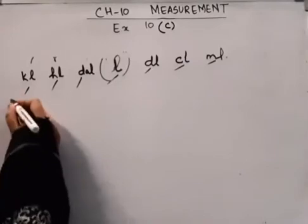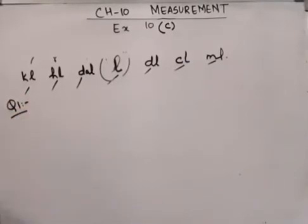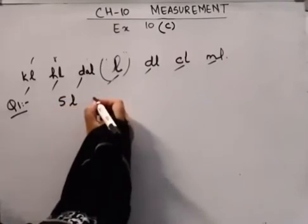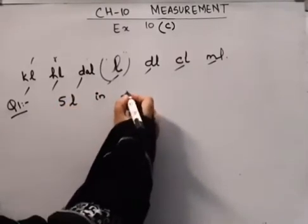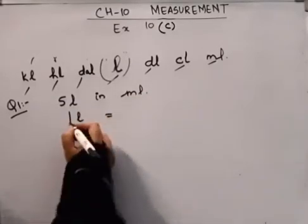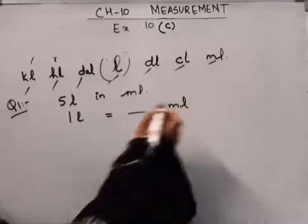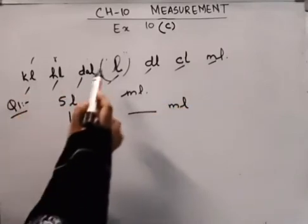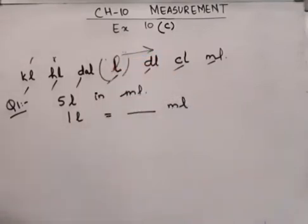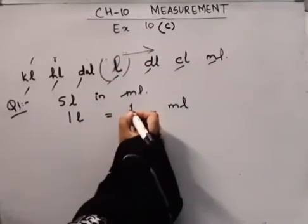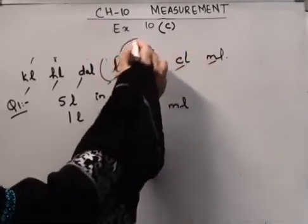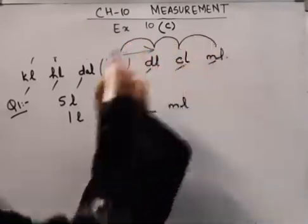Question number one is express 5 liters into ml. How do we do it? We will write this relationship. Here we have 1 liter is equal to dash ml. Now I see that when I move from liter to ml, I am moving towards right hand side. So this means multiply. How do we multiply? Every step is 10 units. 1 step, 2 step, 3 step.